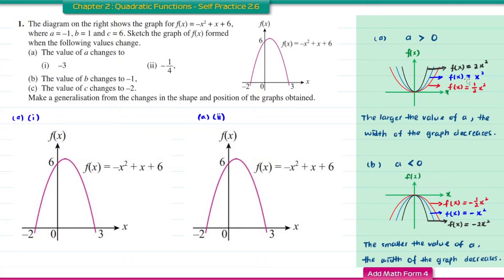First, look at the notes here. For quadratic functions with a greater than 0, this is the graph. The larger the value of a — in this example from 1/2 to 1 and to 2 — the width of the graph decreases.